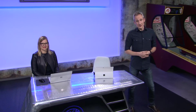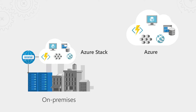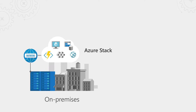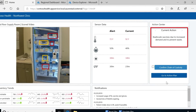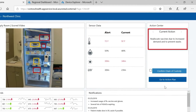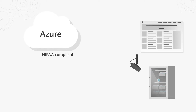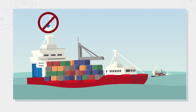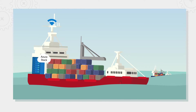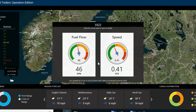Coming up, we take a look at the latest updates to hybrid compute using the power of Microsoft's Azure cloud on-premises with Azure Stack. We'll look at how to run hybrid apps and process data between Azure Stack in your data center and the Azure public cloud to meet your regulatory and policy requirements, and how you can use Azure Stack as a powerful control plane for disconnected scenarios to harness insights from your IoT devices running on the edge.